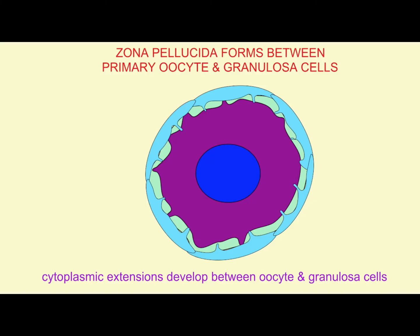A number of glycoproteins are secreted in a layer which will separate the oocyte and these granulosa cells. This cell-free layer is known as the zona pellucida. Within the zona pellucida, cytoplasmic extensions from both the granulosa cells and the oocyte contact each other, and gap junctions form so that signaling molecules may pass between these granulosa cells and the oocyte.